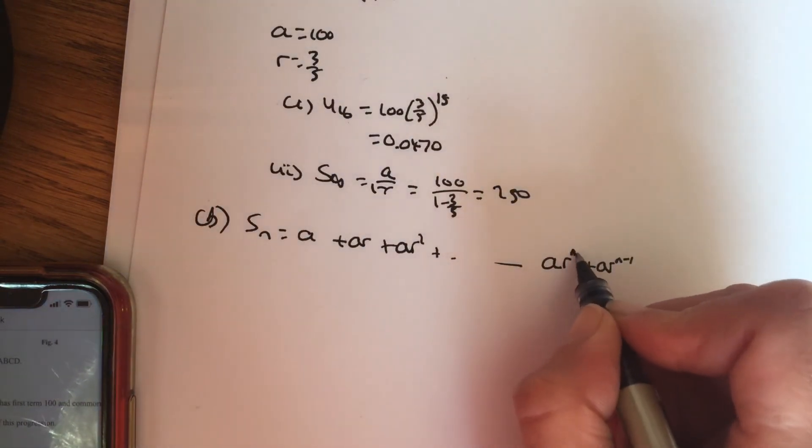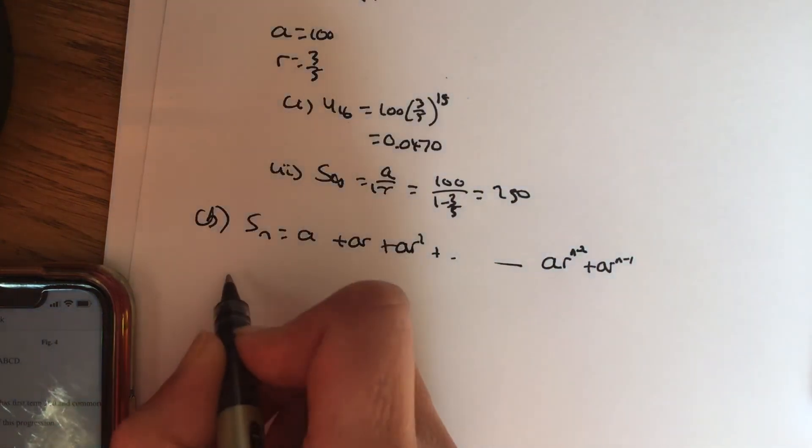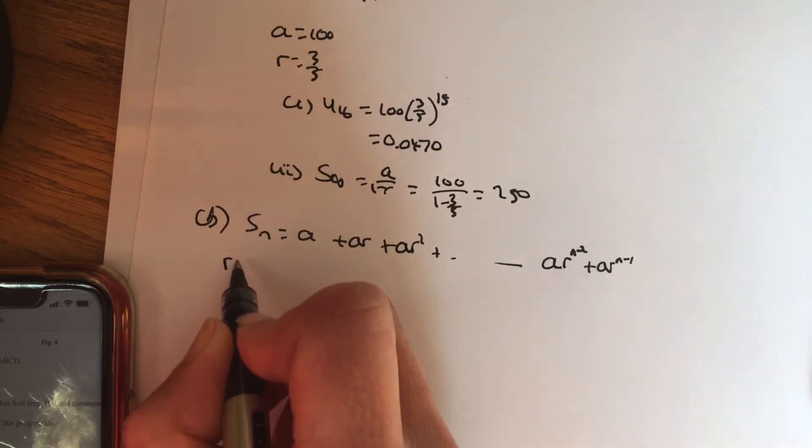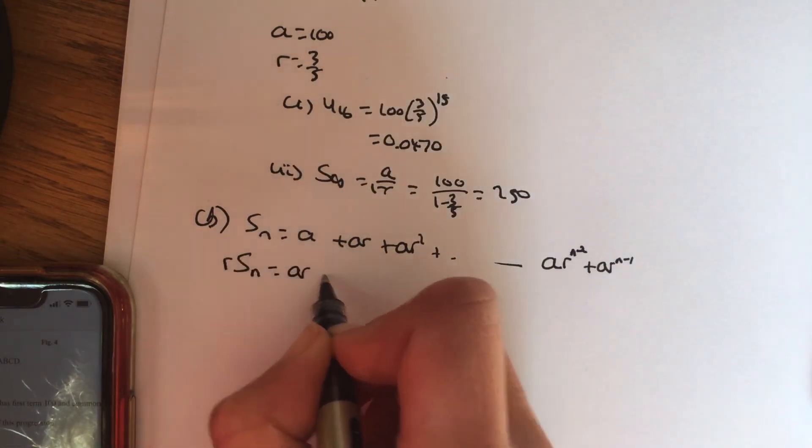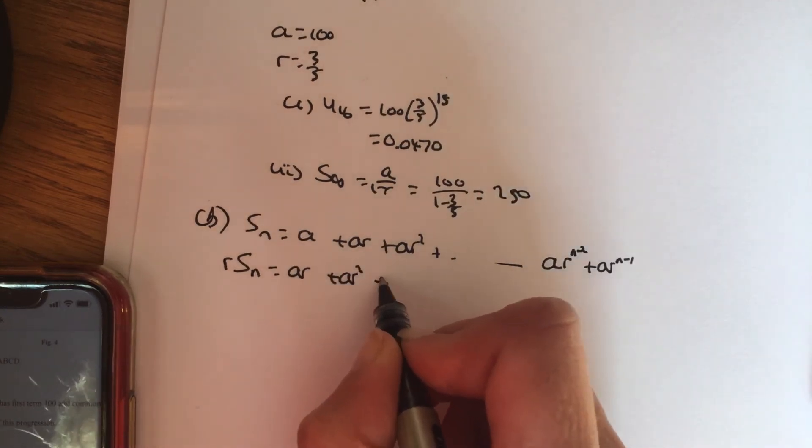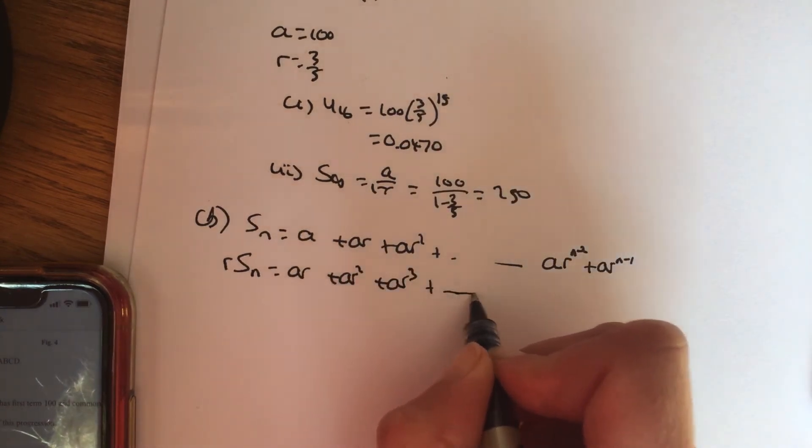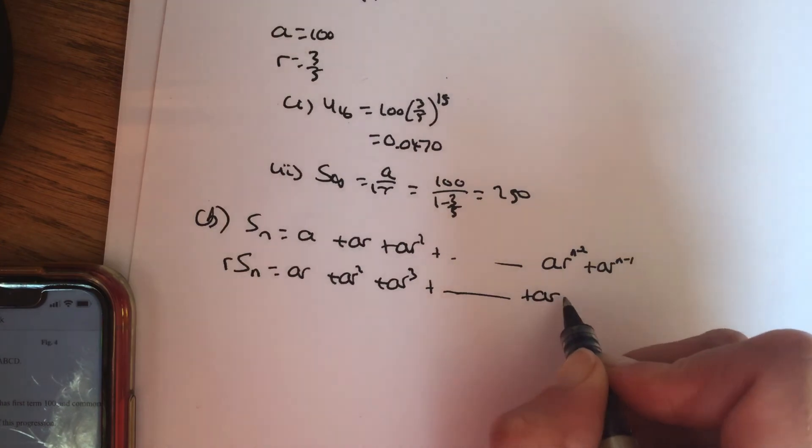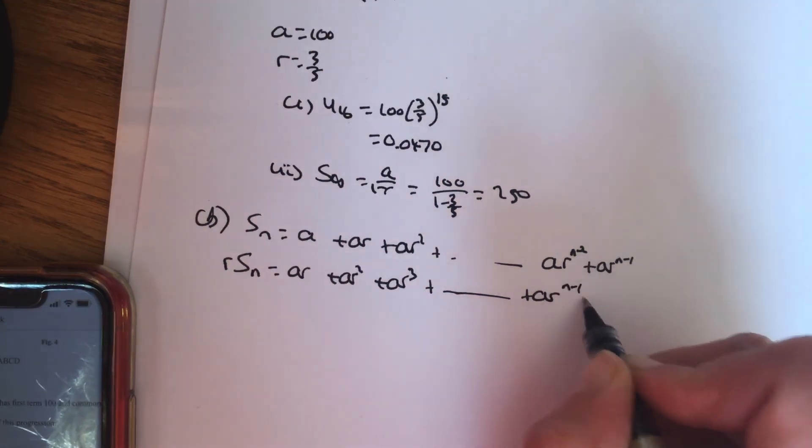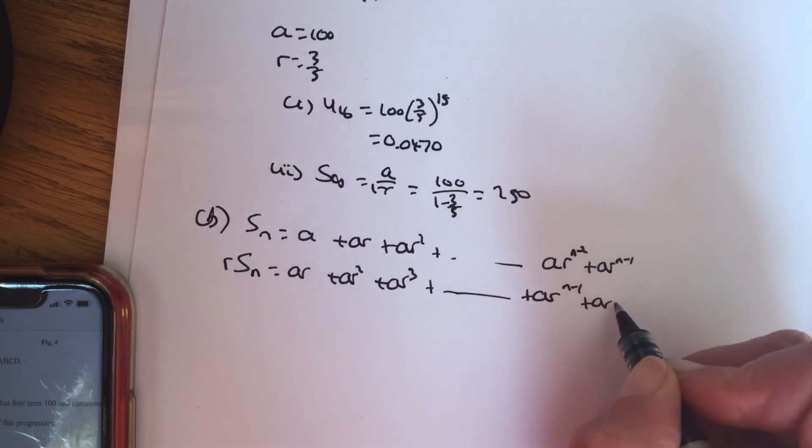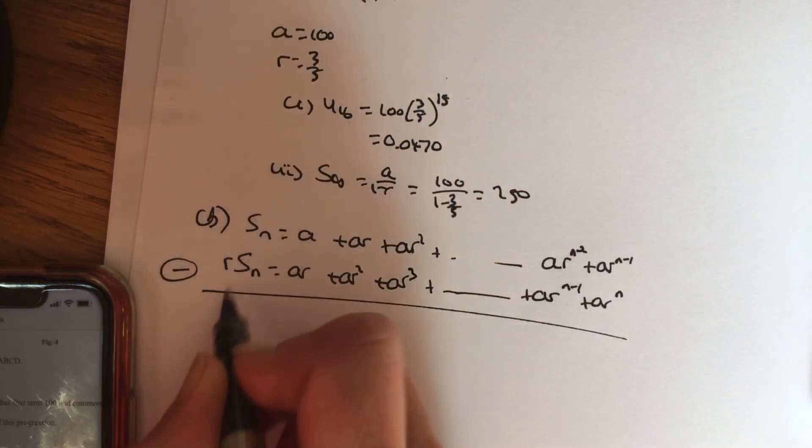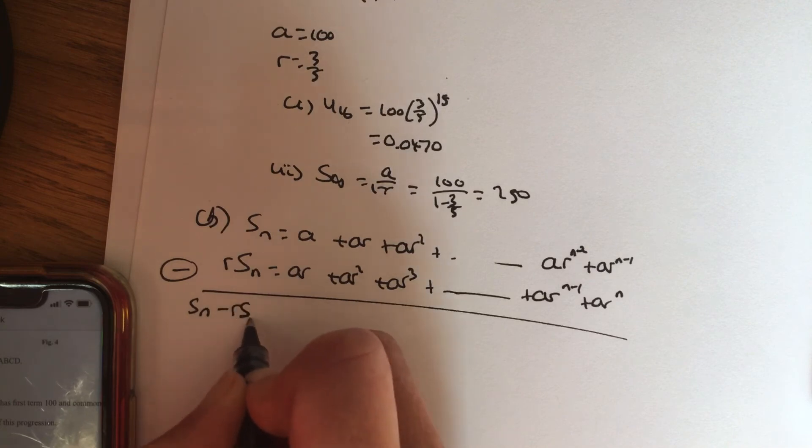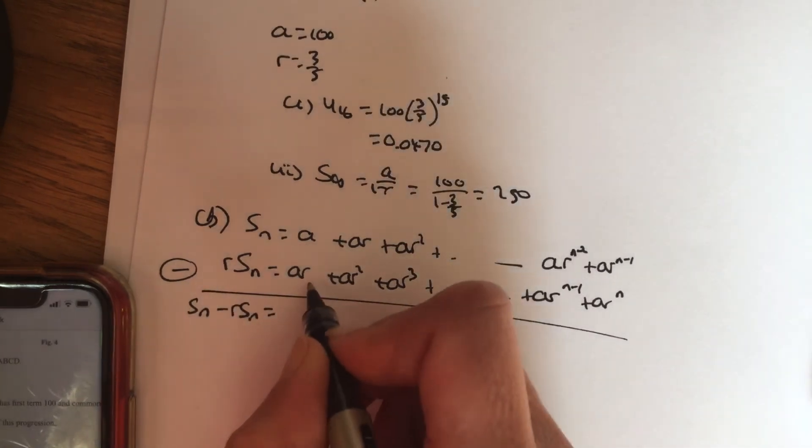Now, for a GP, you multiply each of these terms by r. So ar. The standard learning here is this would need to be learned off. ar^(n-1). I'm multiplying this by ar. You're just left with ar^n. Draw your line. Subtract. So, sn minus rsn equals...